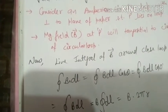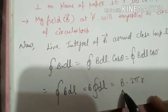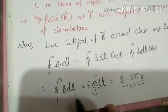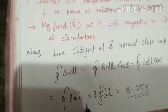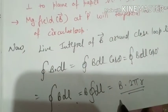This is the total integral of B dot dl. Now we know that integral B dot dl is equal to μ₀I. What is this? This is the value from Ampere's law.